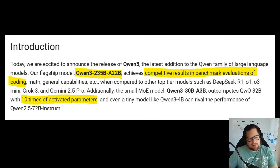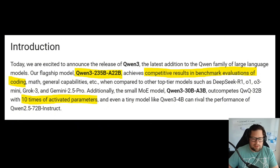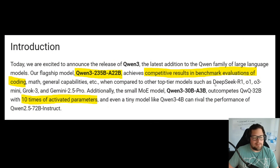But they pull some of the same old stuff that every other model pulls — competitive results and benchmark evaluations of coding, including Gemini 2.5 Pro. Why make that claim? I would have probably let this go if they'd kept it at DeepSeek R1, O1, and O3 Mini. But Llama 3 and Gemini 2.5 Pro especially, in my opinion, is just too bold of a statement.